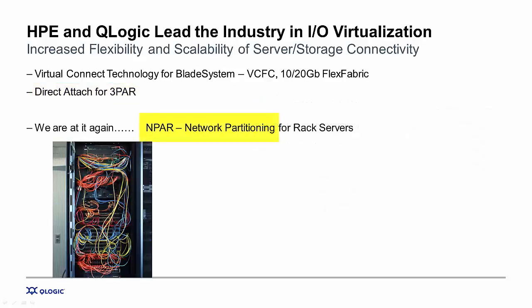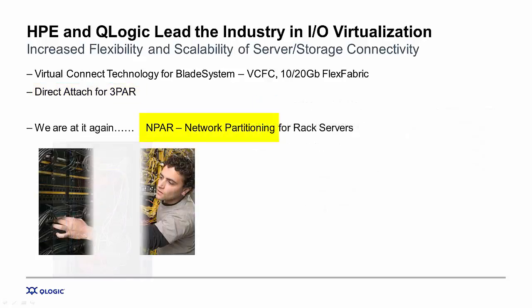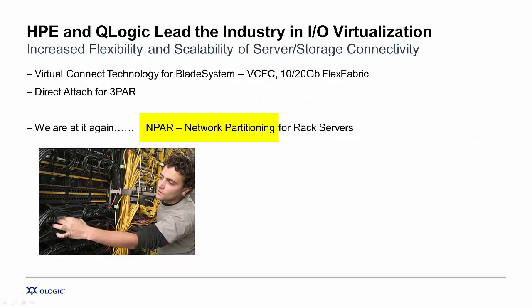We're at it again with the introduction of network partitioning or N-PAR. N-PAR does for rack and tower servers what Virtual Connect Flex 10 and Flex Fabric do for blade system environments from an I-O virtualization perspective.